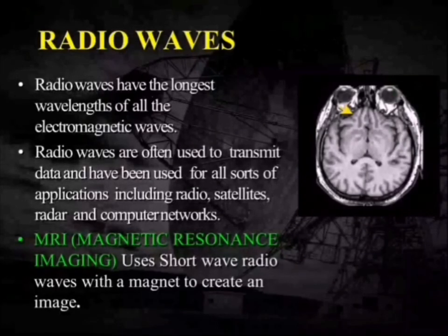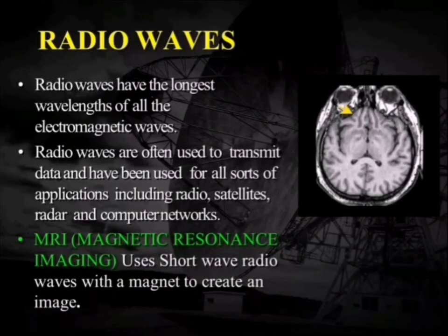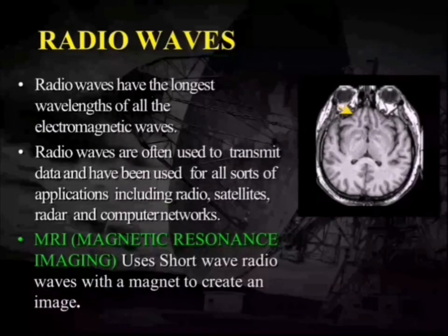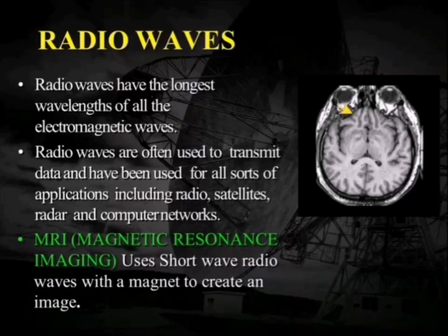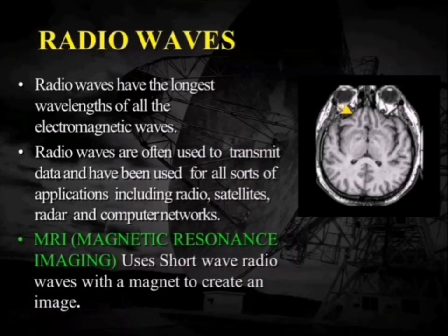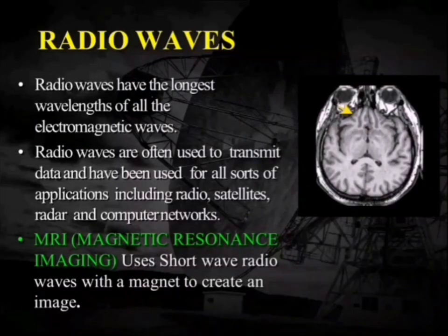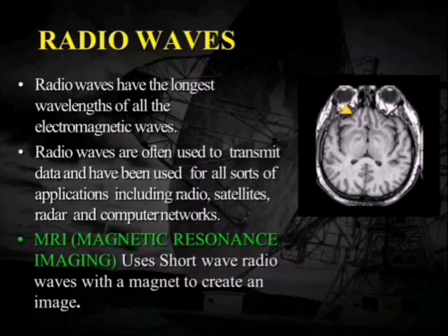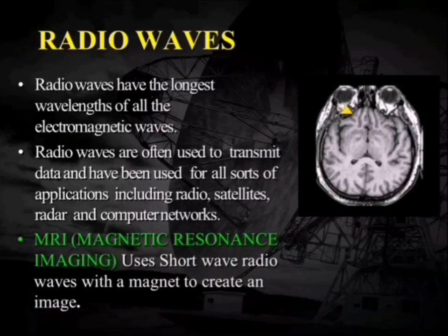Radio waves have the longest wavelength of all electromagnetic waves. They are used to transmit data and have applications including radio, satellite, radar, and computer networks. Magnetic resonance imaging (MRI) uses short-wave radio waves combined with a magnet to create images that are very helpful in detecting various diseases.